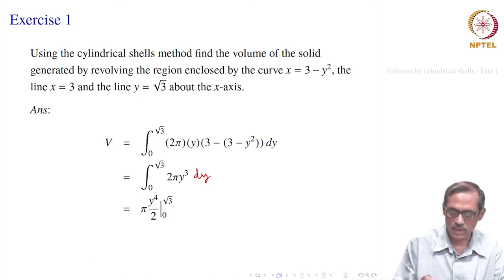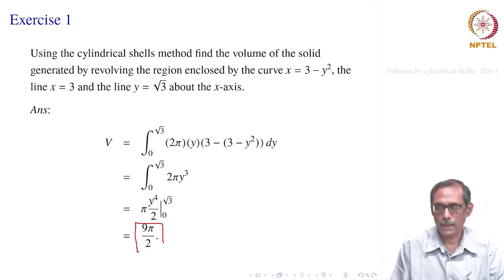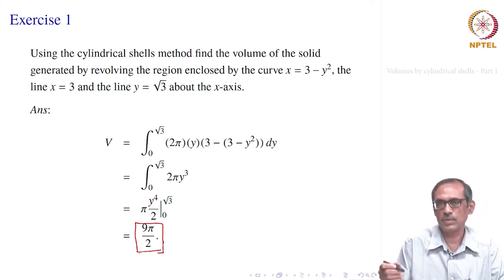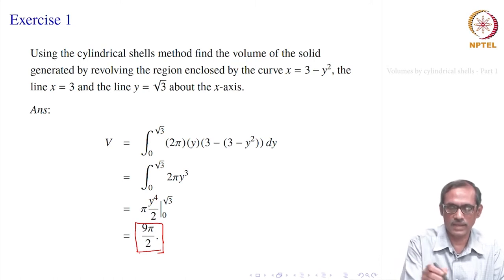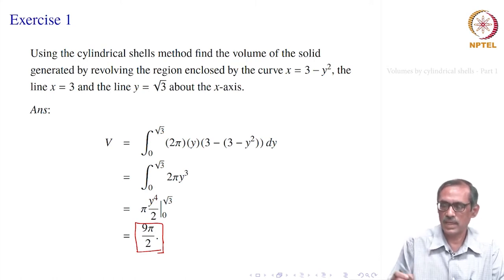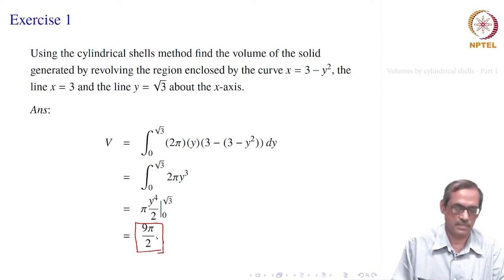Evaluating at √3 gives 9π/2. Here also you can do it by the disk method, but we are asked to do it by the cylindrical shells method. You can still do it by the disk method and verify whether the answer is the same or not.